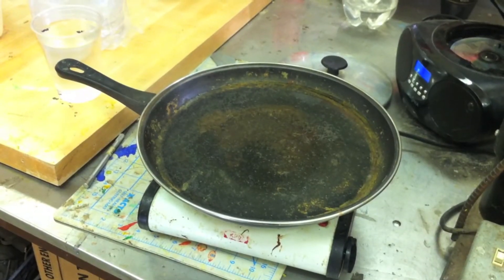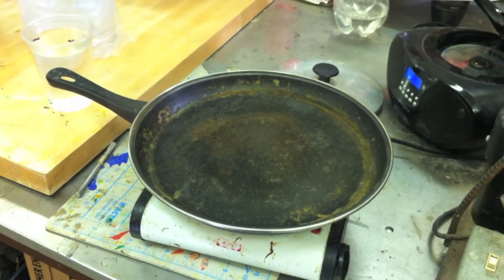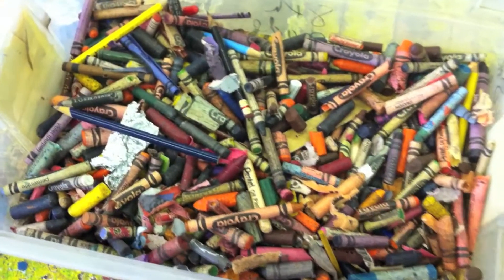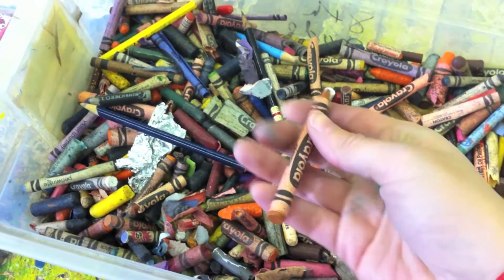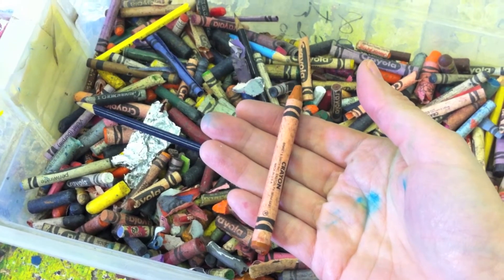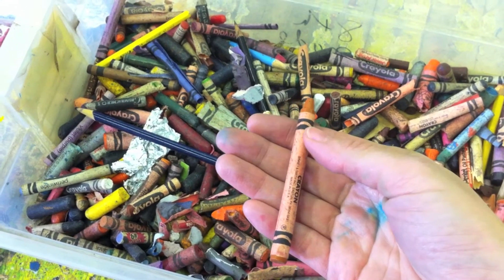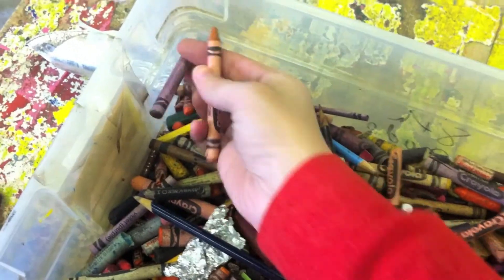The first thing to do is to put a pan of water on to heat up. For this experiment, you will need 2 crayons. You can pick any color that you like, just make sure that it's approximately 2 crayons.